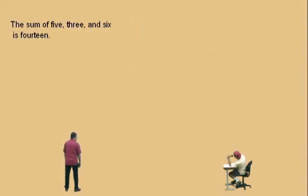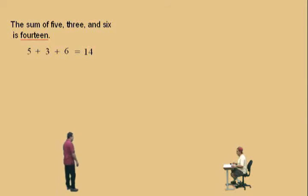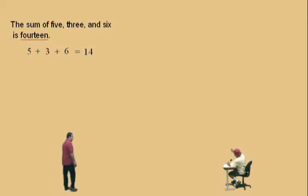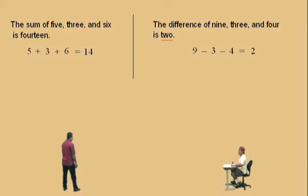Okay Charlie, we've got a couple more to do. Bring us home. The sum of five and three and six is fourteen. Very nice. Here we have three numbers that are being summed — the sum of five, three, and six is fourteen, and that's true. We've got one more to go. The difference of nine, three, and four is two. Very nice there, Charlie.